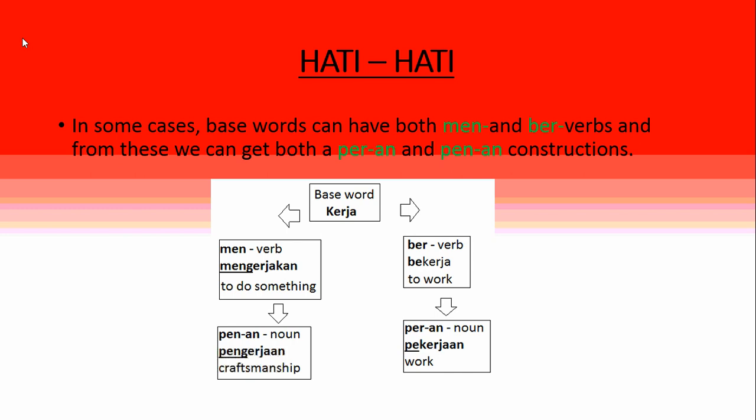Be careful — some base words can have both a men verb and a ber verb, giving both pen-an and per-an constructions with different meanings. For example, the base word kerja: the me verb mengerja means 'to do something,' so pengerjaaan is 'craftsmanship.' The ber verb bekerja means 'to work,' so pekerjaan is 'the work' or 'the occupation.' You'll need to watch for these carefully when learning or reading Indonesian.